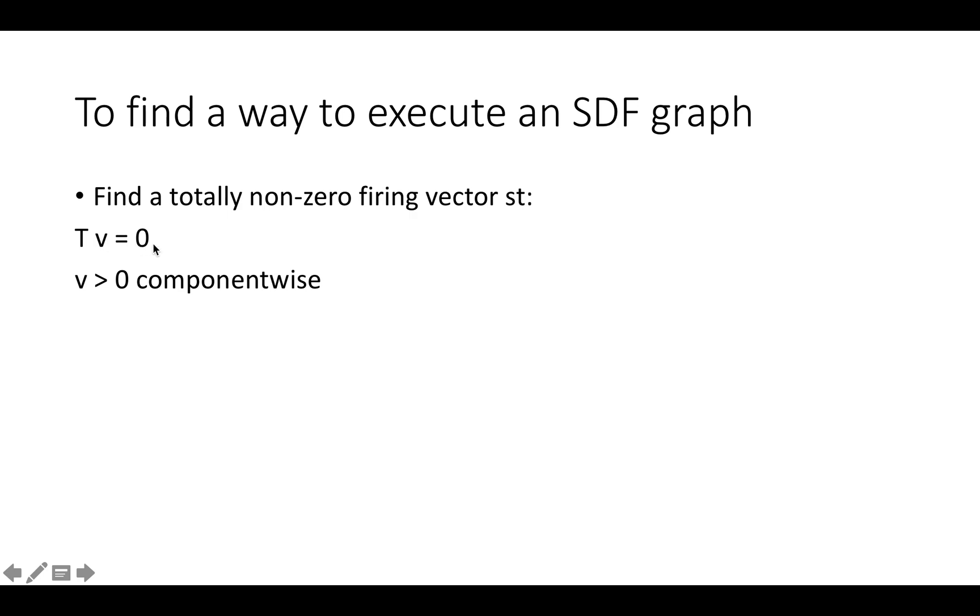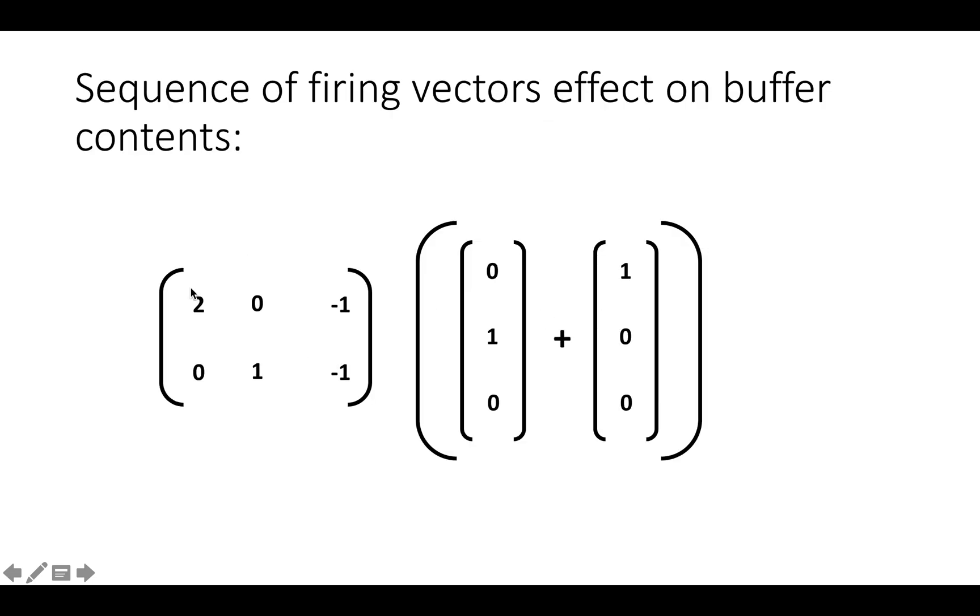These criteria might seem a little odd, but what the first criteria means is that if T times v is equal to 0, that means the net effect of the sequence of firings of all of the elements denoted in v is equal to 0, so there's no change in the amount of data in the buffers over the firing of the sequence. The second criteria, v is component-wise greater than 0, really just means that every one of these components has to be greater than 0, which means every single node in the graph has to fire at least once.